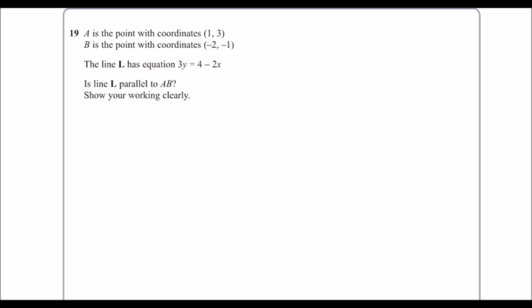So A is the point with coordinates (1, 3), B is the point with coordinates (-2, -1), and we've got a line L with equation 3y = 4 - 2x. We need to know if AB, this distance here, is parallel to this line.